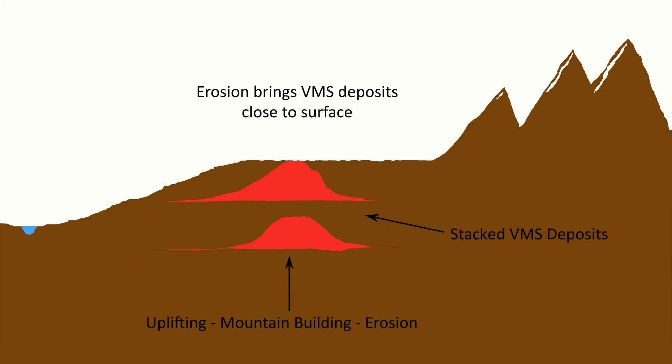Uplifting due to continental collision eventually moves the rock containing these deposits upward, exposing it to the forces of erosion. Once eroded, it will be transported back to the ocean in the form of sediments that will eventually be scavenged to repeat the cycle once again.